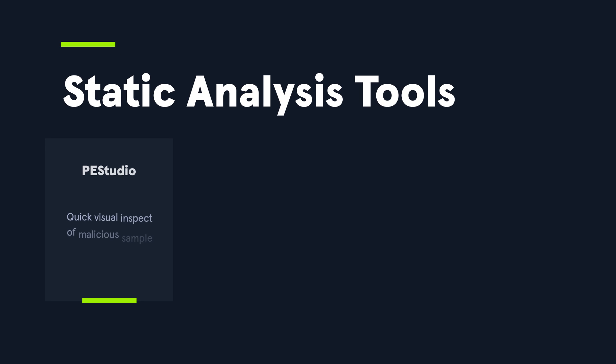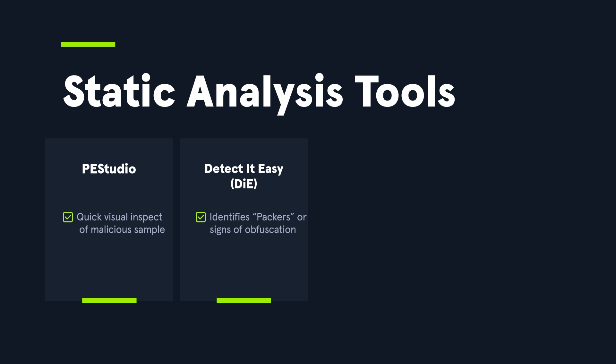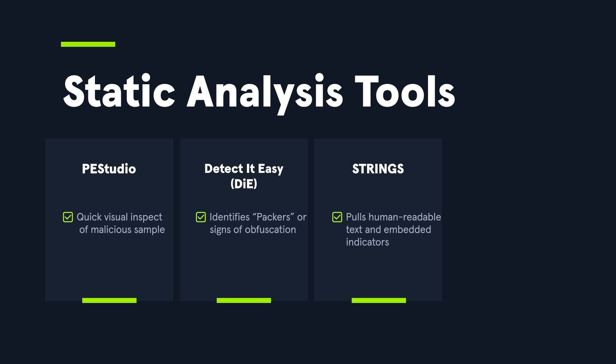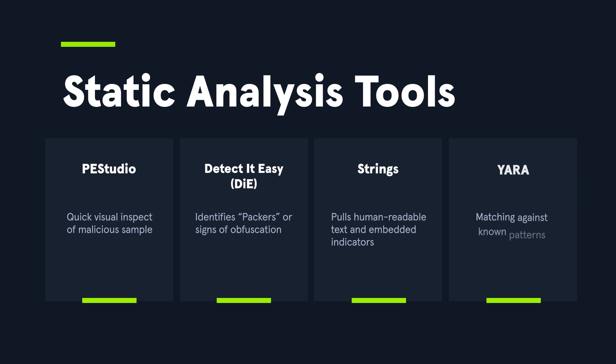Some tools I'd recommend are as follows. First, PE Studio — one of the more popular ones that creates a nice visual representation for inspecting your malware sample. Next, Detect It Easy (or DIE) — really useful for detecting packers or any form of obfuscation. Then there's Strings, which allows you to pull any readable text or embedded indicators from your samples. And lastly, YARA — for matching against known patterns, whether string-based, byte sequences, or a combination of both, matched off of signatures or rules you've created yourself.